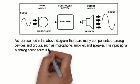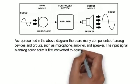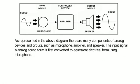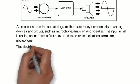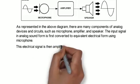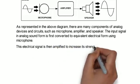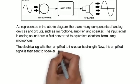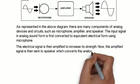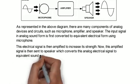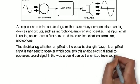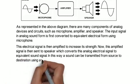This electrical signal is then amplified to increase its strength. Now this amplified signal is then sent to speaker which converts this analog electrical signal to equivalent sound signal. In this way, a sound can be transmitted from source to destination using analog devices and circuits.